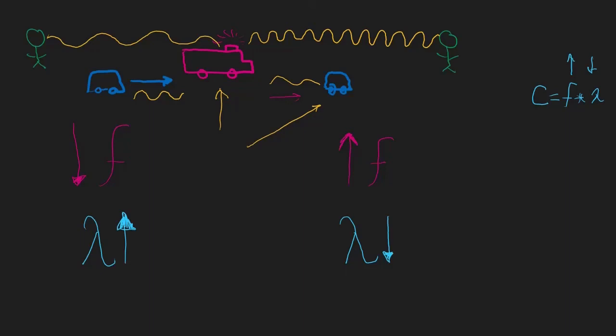If the source and the observer are moving at the same speed, it's the same as though neither one is moving, for the purposes of the Doppler effect. Essentially, if the distance between us and the source is decreasing, the frequency is higher; and if the distance between us and the source is increasing, the frequency is lower.